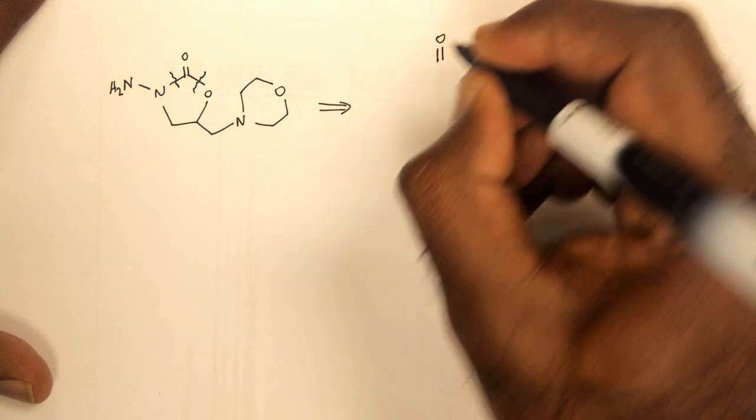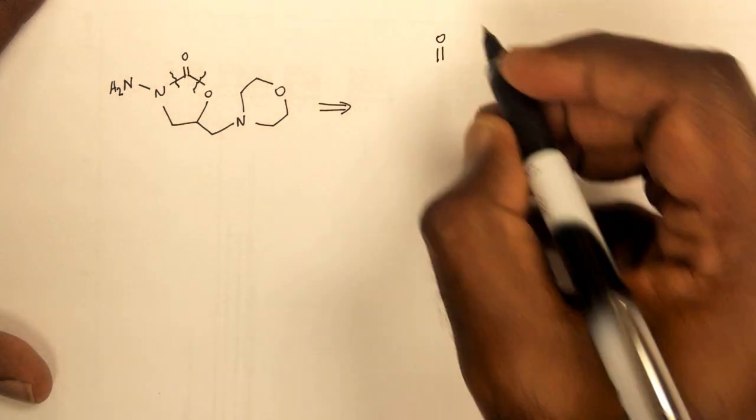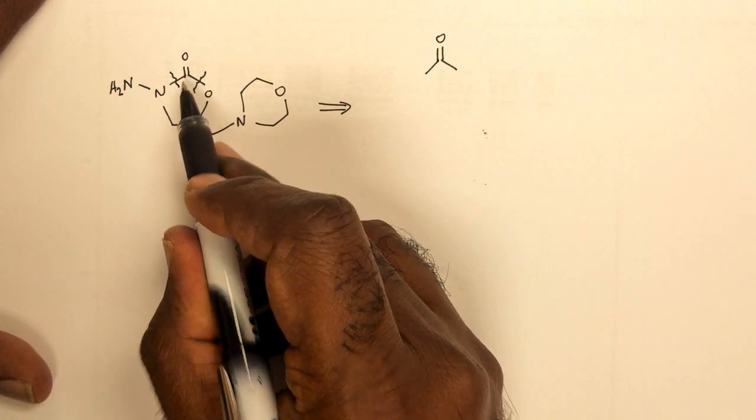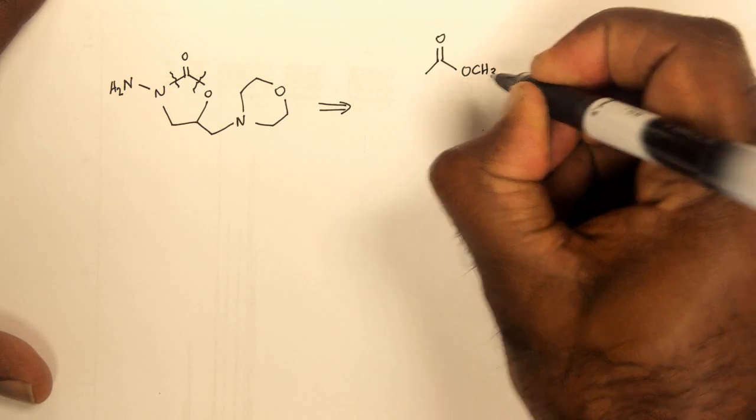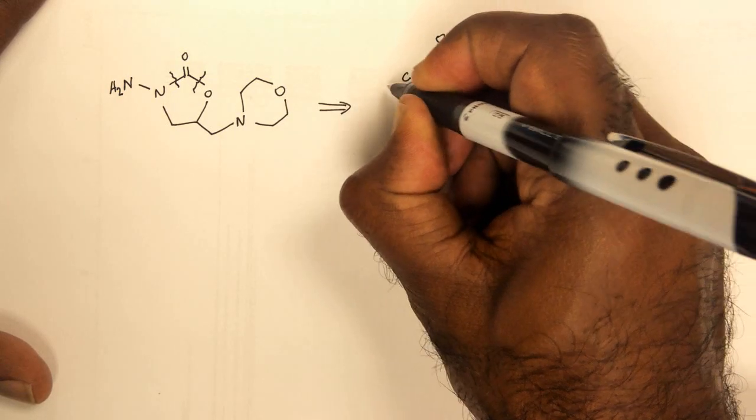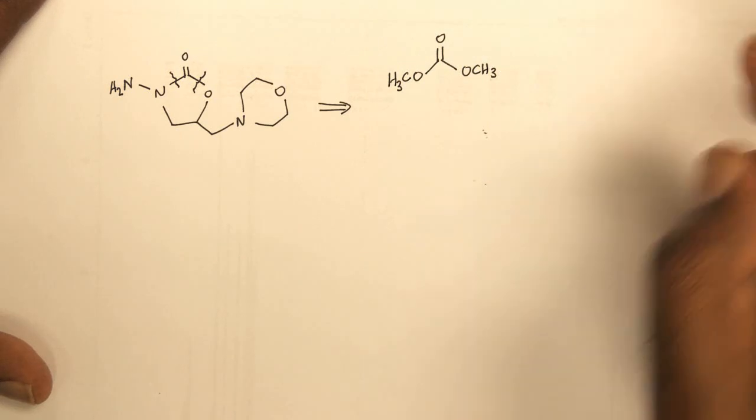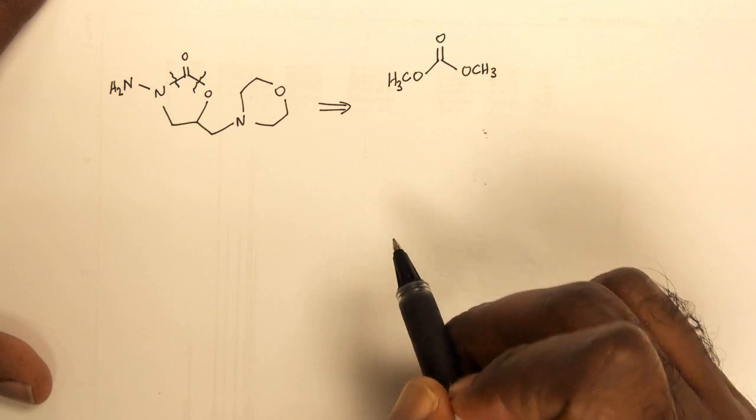We have this connection to a carbonyl group. In order to get both nucleophiles to attack at that particular carbon, we need two leaving groups attached to the carbonyl carbon. And that gives you this dimethyl carbonate structure that you have here.